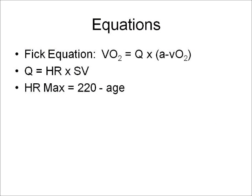The final slide covers the key equations. The Fick equation: VO2 equals Q times AVO2 difference. Q, cardiac output, equals heart rate times stroke volume. And maximum heart rate is estimated by taking 220 minus age.